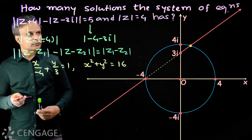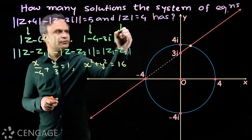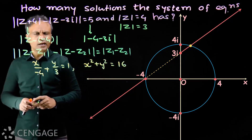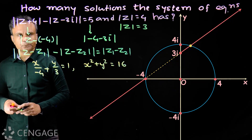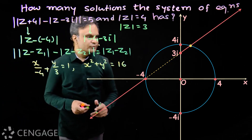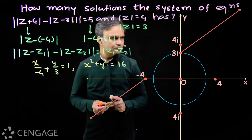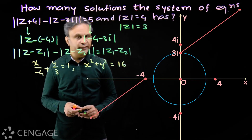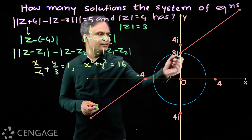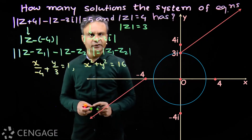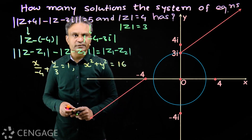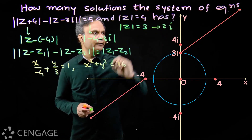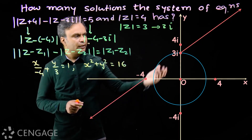Now suppose the second equation is modulus of z equal to 3 instead of modulus of z equal to 4. How many solutions will there be? We draw the circle with center at origin and radius 3. From the diagram there will be only one solution, which is 3i. The other ray will not intersect the circle. So plotting makes our work easy.